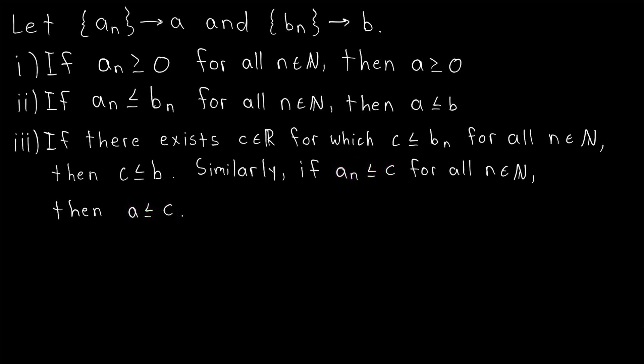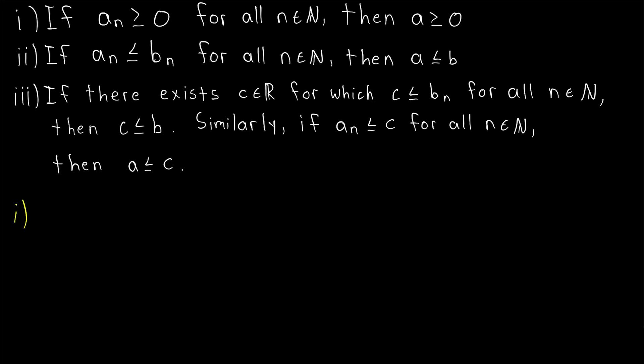Sequences can be quite tricky at times, so it's very nice to have some more intuitive results about how they work. These statements are about as easy to prove as they seem obvious. We'll prove one with a straightforward contradiction argument, and then using one as well as one of our sequence limit laws we'll prove two, and then we can use two to prove three. The limit law we'll be using today is the limit law for the difference of sequences. So let's get right into things and prove statement one.